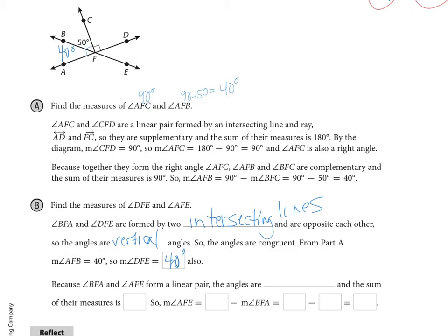Now because BFA and AFE form a linear pair, the angles are supplementary and that means the sum of their measures, remember C goes with 90 S goes with 180, so AFE is just 180 minus what we already know BFA is, which is 180 minus 40 or 140 degrees. So again we get 40 and 140.